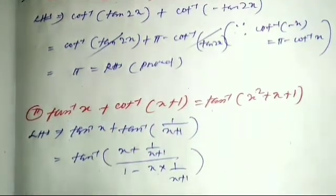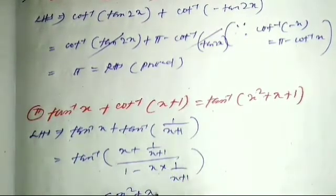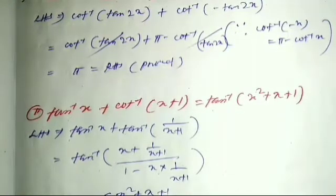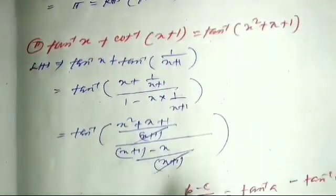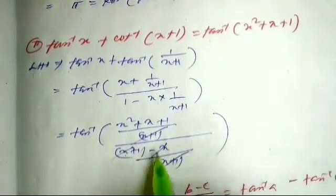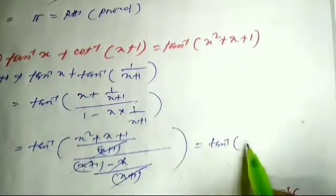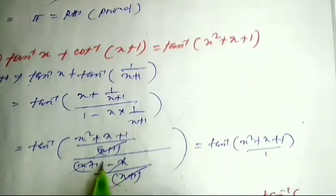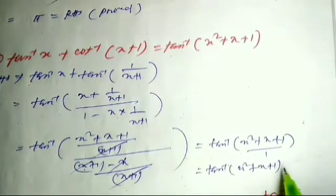Applying the formula, we get tan⁻¹ of (x + (x+1)) divided by (1 - x(x+1)). The numerator gives x² + x + 1 terms, and after cancellation we get tan⁻¹((x² + x + 1) / 1), which equals tan⁻¹(x² + x + 1). This is RHS, so it is proved.